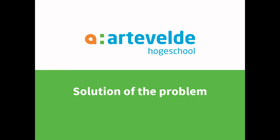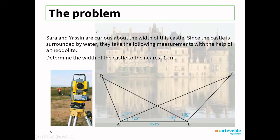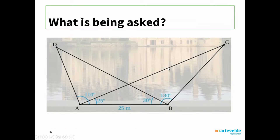In this part of the video, we are going to solve the castle math problem. Sarah and Yassin are curious about how wide the castle is. Because of the water surrounding the castle, they use a theodolite to measure its width. Calculate the width of the castle accurately to 1 cm. A theodolite is commonly used to measure something from a distance. Before we start, you have to ask yourself: what exactly do I need to calculate? In this problem, you need to calculate the width of the castle, also known as line segment DC.